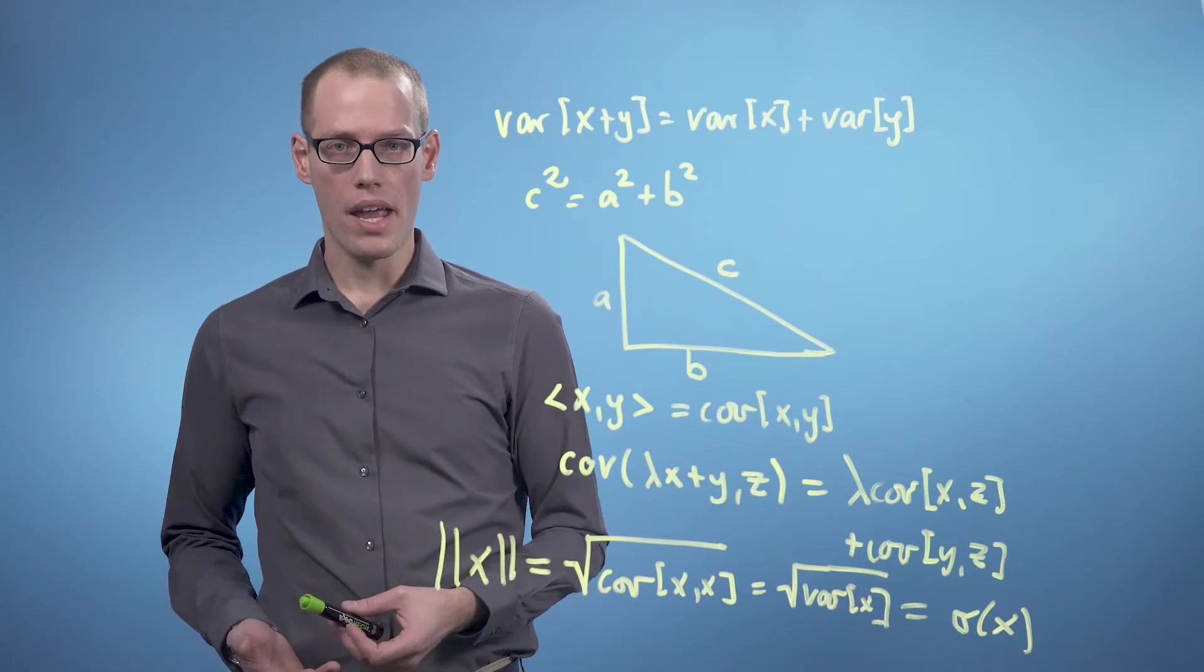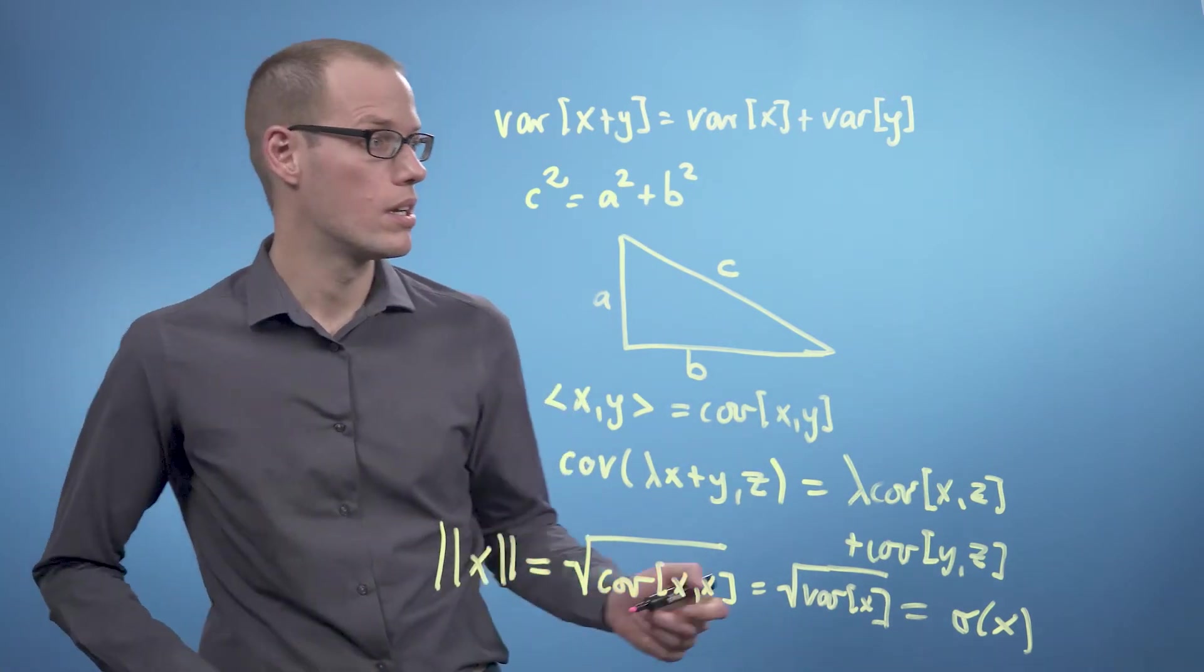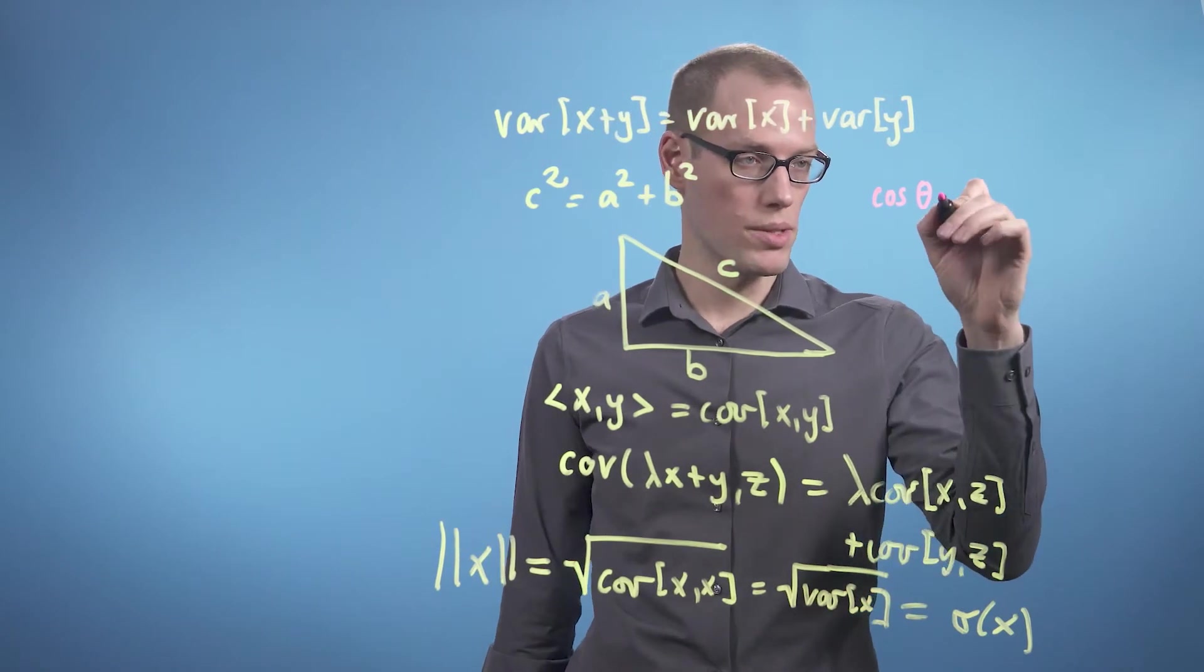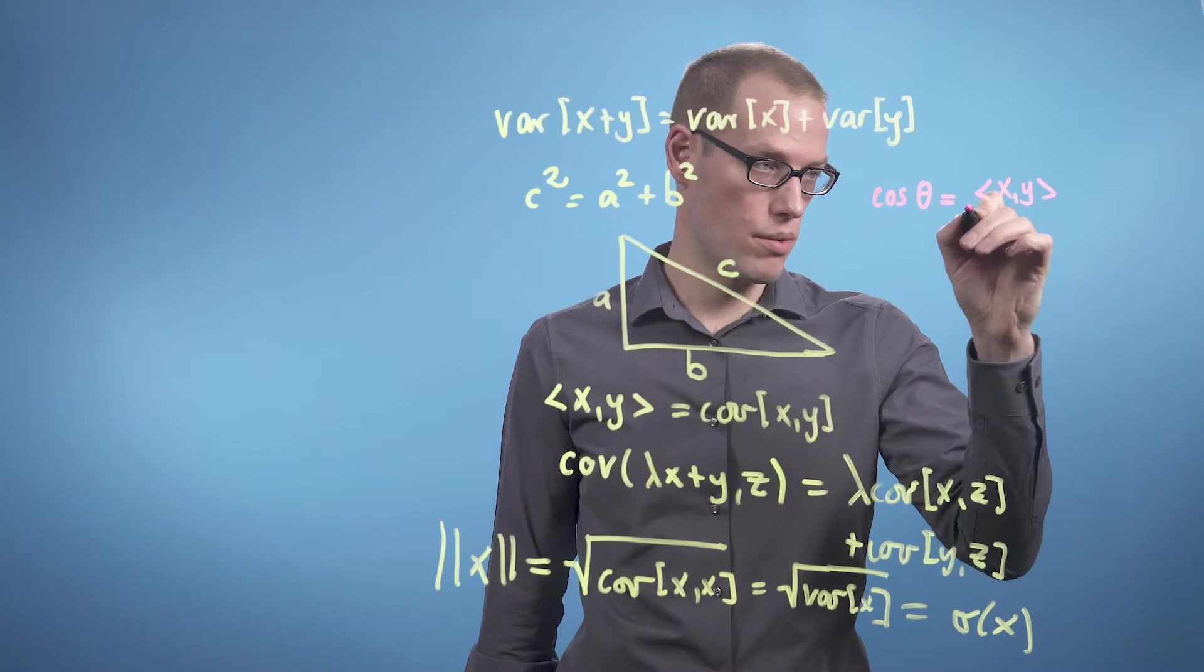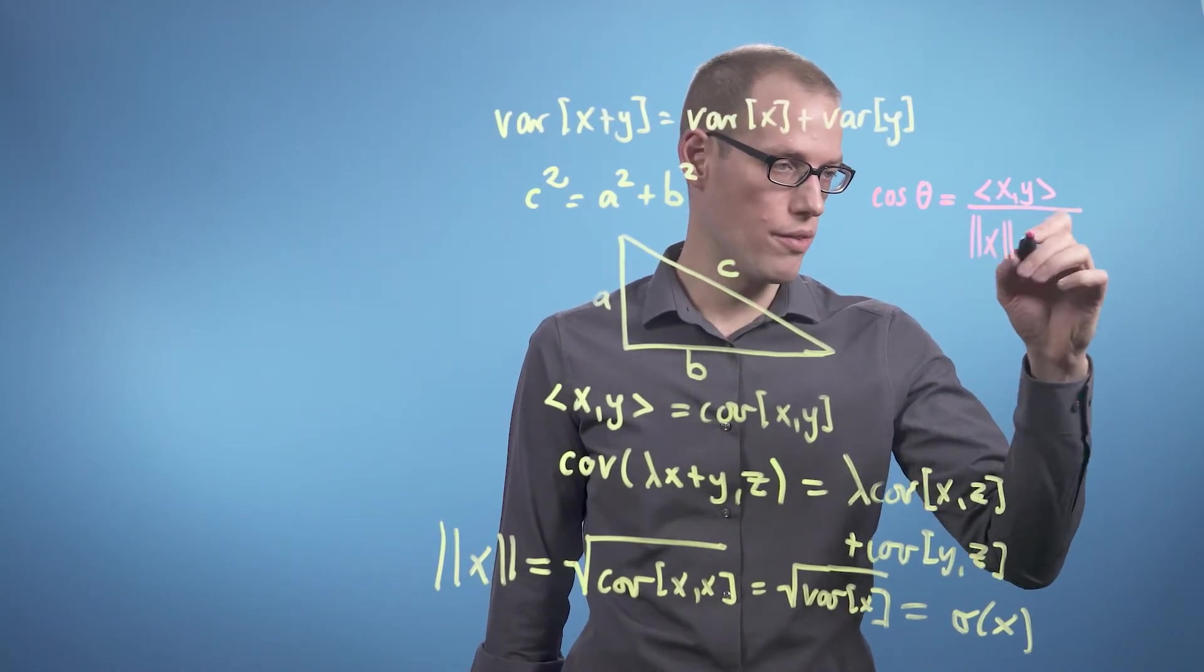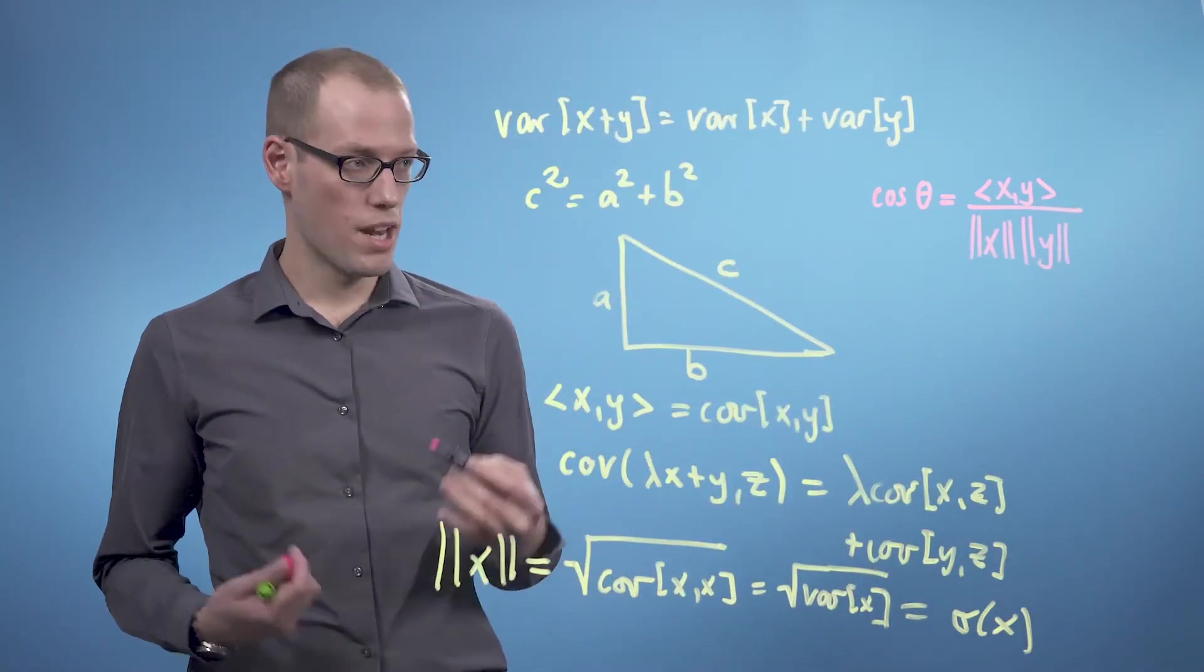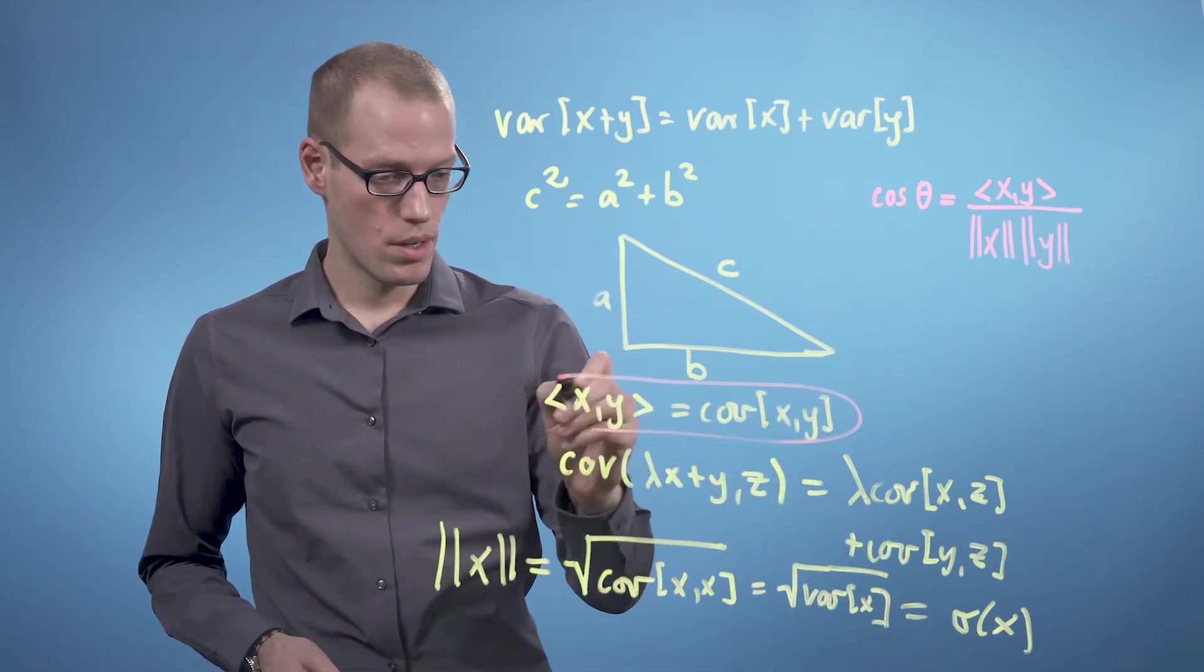If we now look at the angle between two random variables, we get the cosine of θ, which is the angle between two random variables, is by definition the inner product between the two random variables divided by the length of the first random variable times the length of the second random variable.